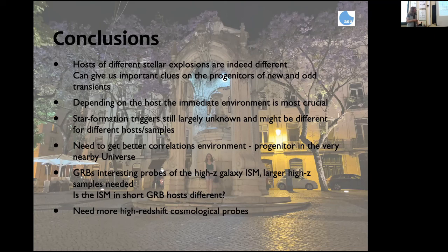We need to establish very good correlations between environment and progenitor in the local universe if we want to use these objects in the high-redshift universe, and we need more high-redshift cosmological probes that can actually do reliable cosmology. Thank you very much.